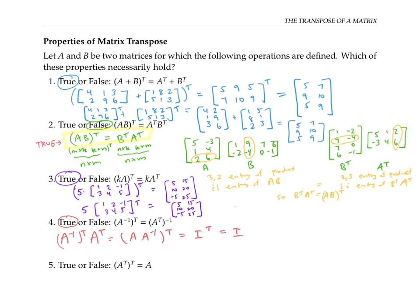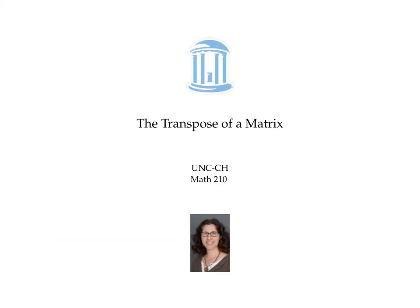Finally, is (A transpose) transpose the same as A? It's true, because if we switch the rows and the columns and then switch the rows and the columns again, we get back to the same thing. In this video, we defined the transpose of a matrix and looked at how transpose interacts with other matrix operations like multiplication, addition, and inverses.